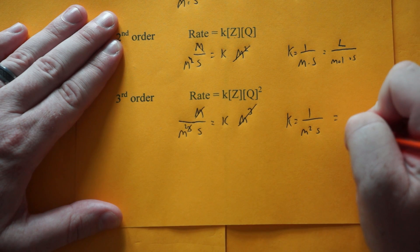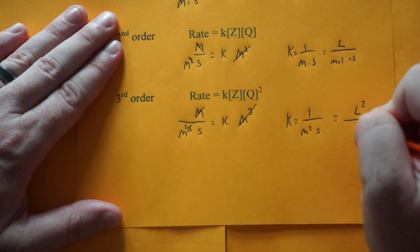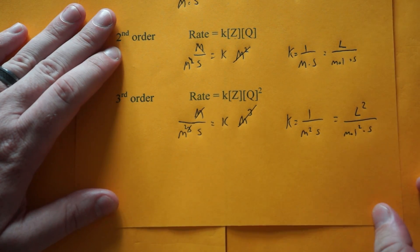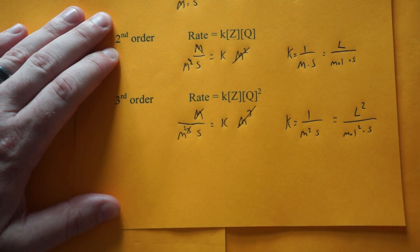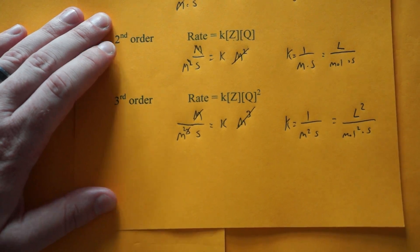And that would also be liters squared over moles squared seconds or minutes. You can change the time, whatever you're given in your problem. And that's how you determine the units for the rate constant k.